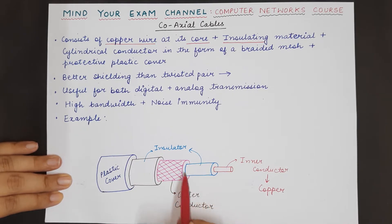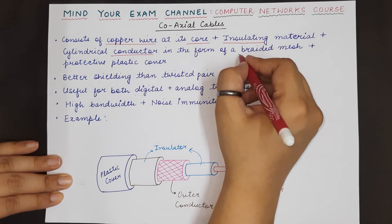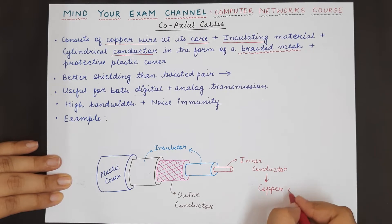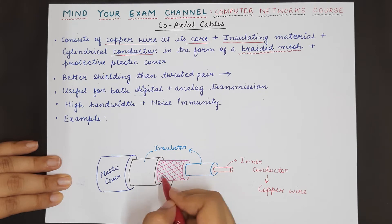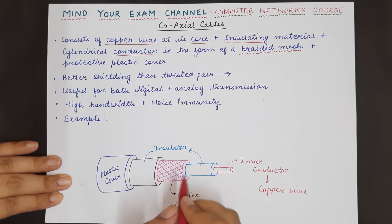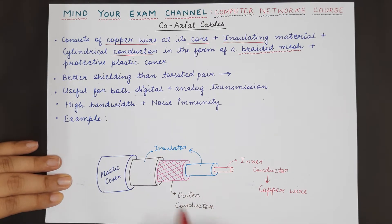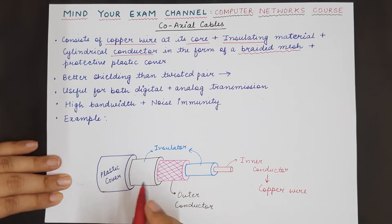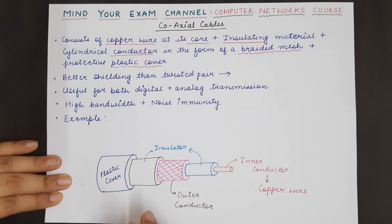After the first insulating material there is another cylindrical conductor which is in the form of a braided mesh. So inside, at the center we have a copper wire, then the copper wire is covered with a plastic insulator, and this insulator is covered with a braided mesh which is a conductor — a metal mesh. Further, this outer conductor is covered with a second insulator, and finally a protective plastic cover covers the entire coaxial cable.